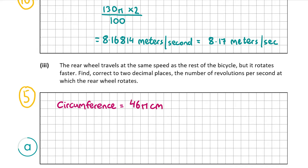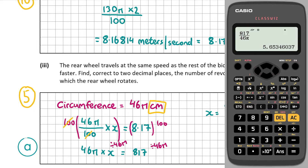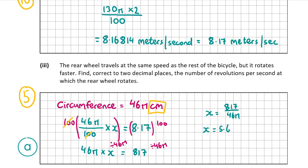We need to find how many revolutions it takes to achieve 8.17 meters per second. Dividing by 100 to convert centimeters to meters, and multiplying by x — the number of revolutions — we set that equal to 8.17. Multiplying both sides by 100 gives us 46π times x equals 817. Dividing both sides by 46π gives x equals 817 over 46π, which evaluates to 5.65346, so correct to two decimal places that's 5.65 revolutions per second.